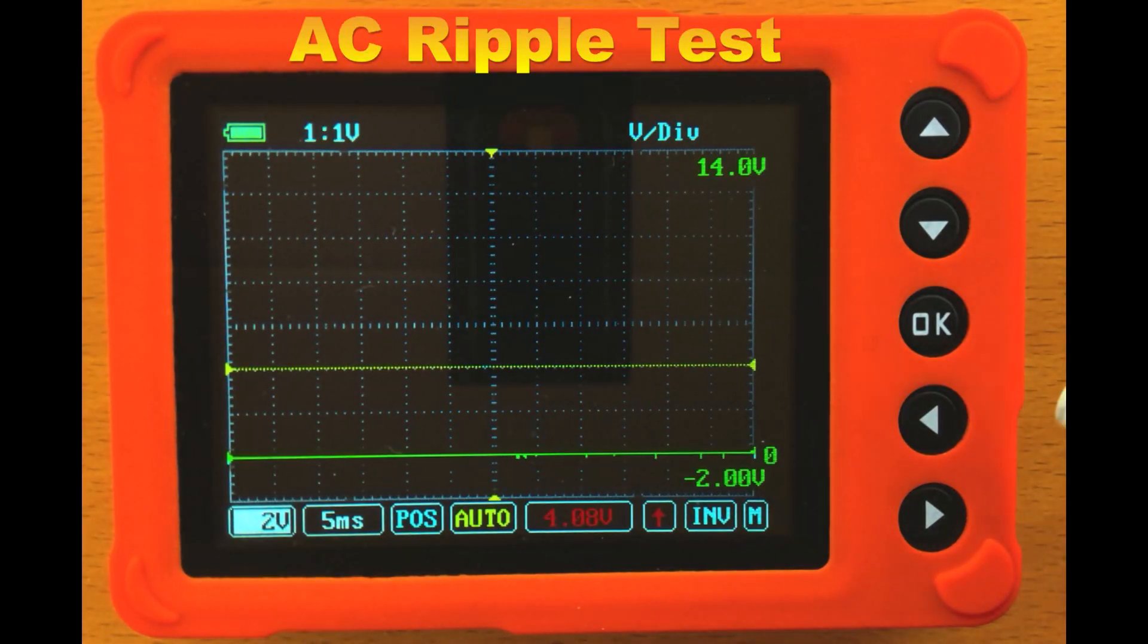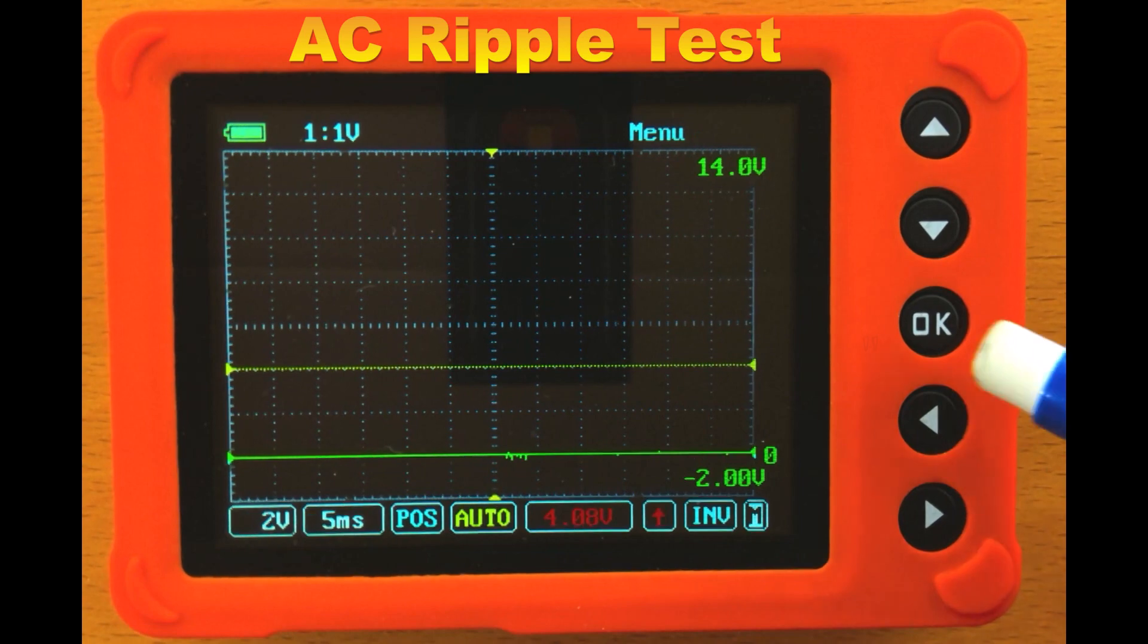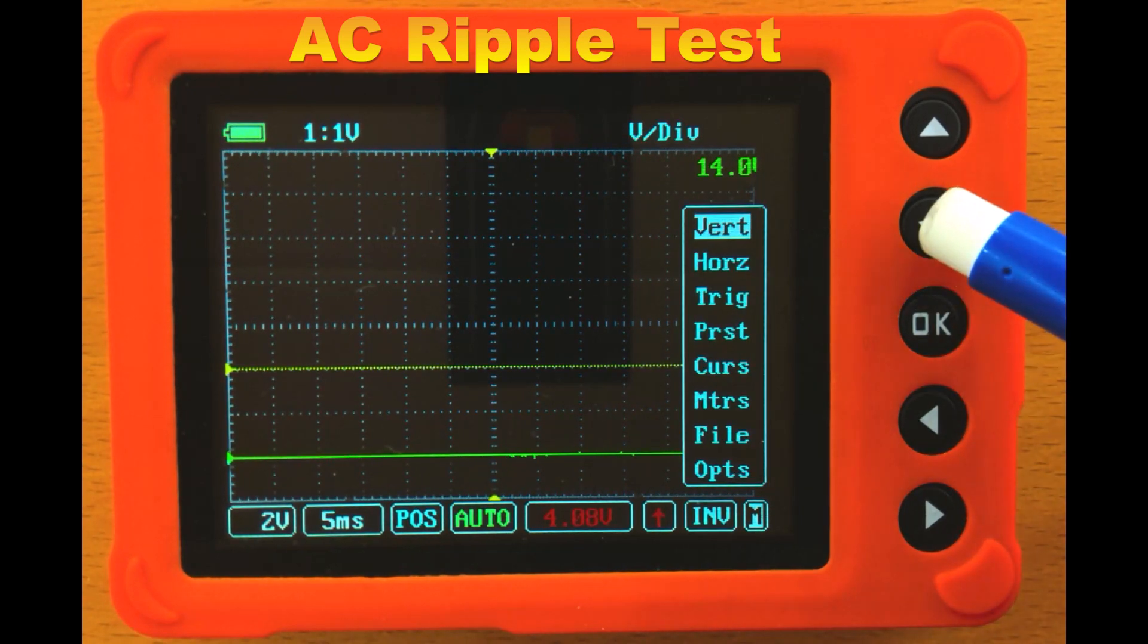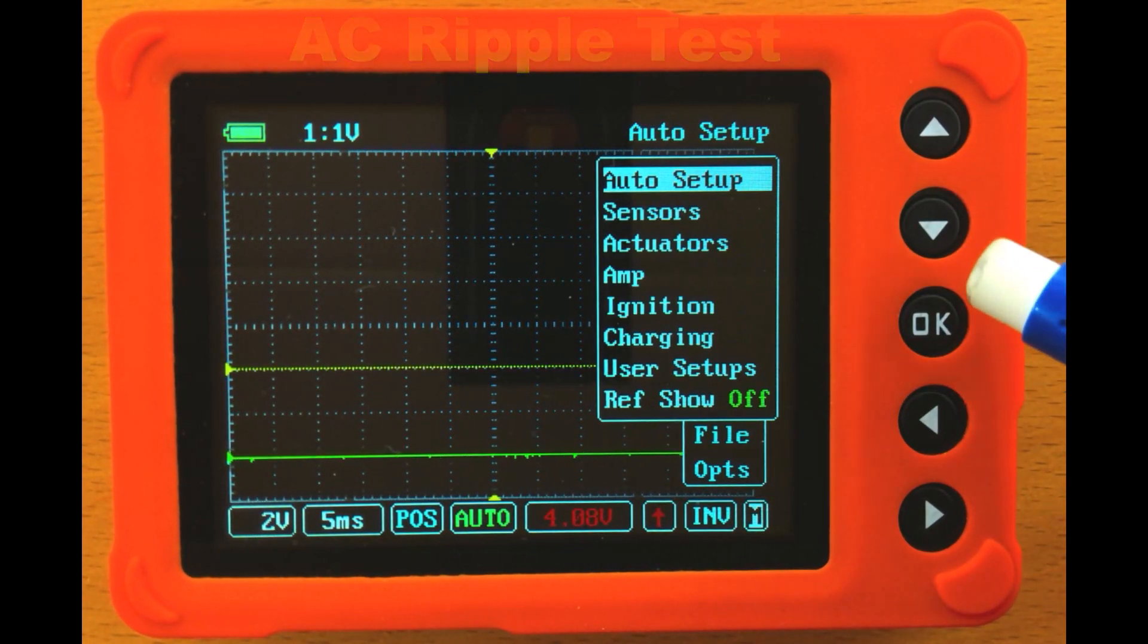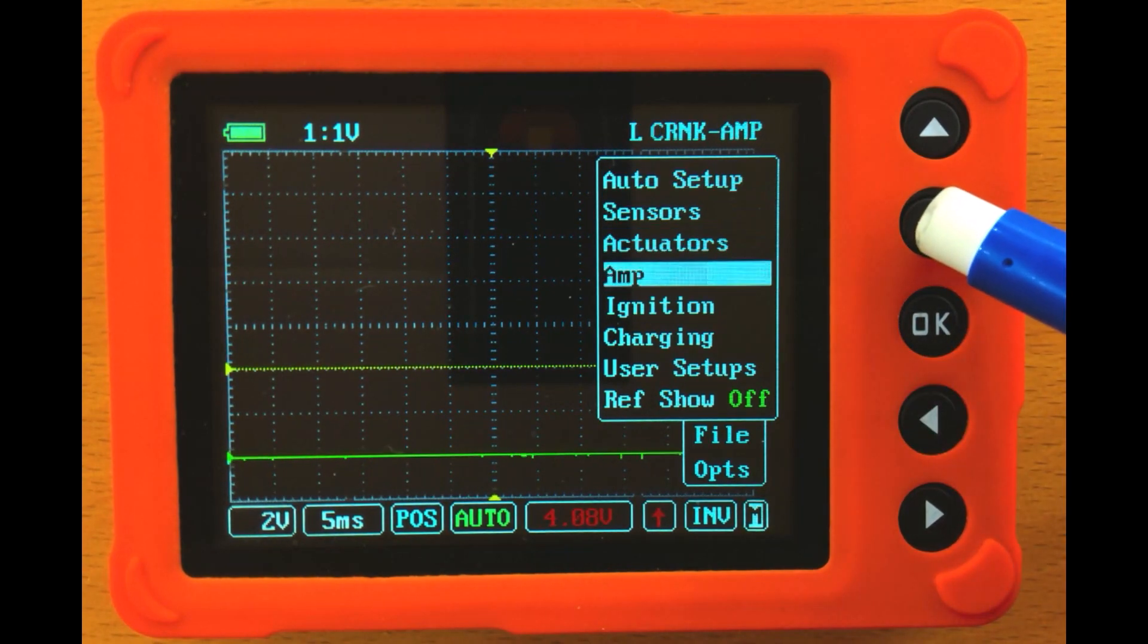To set this up for AC Ripple, we're going to navigate over to the menu, we're going to hit OK, then we're going to navigate down to Presets. I'm going to hit OK, then I'm going to navigate down to User Setups.